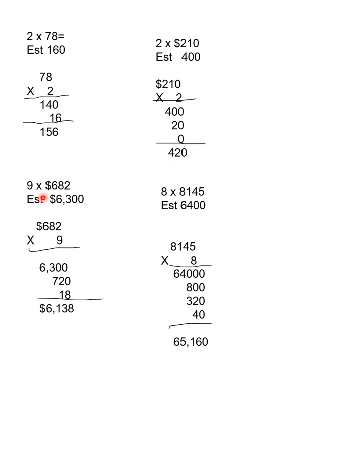All right, 9 times $682. I said my estimate was 6,300, and that's because 682 is closer to 700, and 9 times 700 is 6,300. So 9 times 600 is 6,300, 9 times 80 is 720, 9 times 2 is 18. My answer is $6,138. All right, 8 times 8,145. I estimated that to be 6,400 because 8,145 is closer to 8,000 than 9,000. All right, so I went 8 times 8,000 is 6,400. 8 times 100 is 800. 8 times 40 is 320. 8 times 5 is 40. My answer is 65,160.